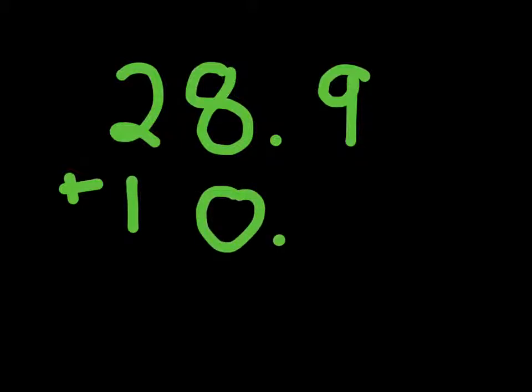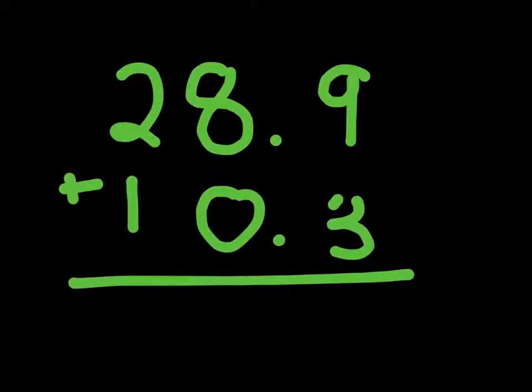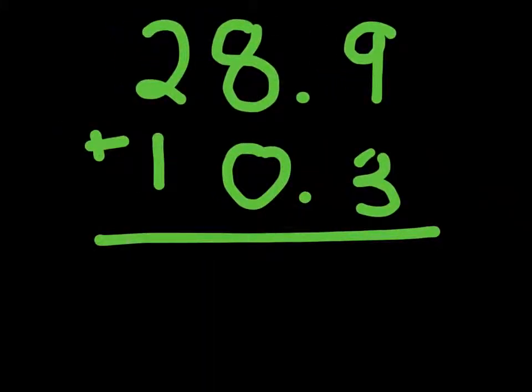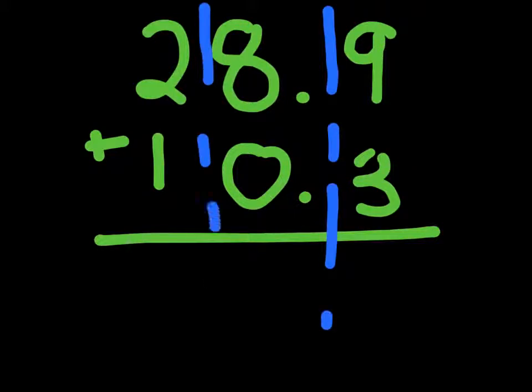Let's say we have 28.9 plus 10.3. Well, this one we're going to have to do some carrying over, but it's fairly simple. We've done it with addition before. So, let's break these up into columns.